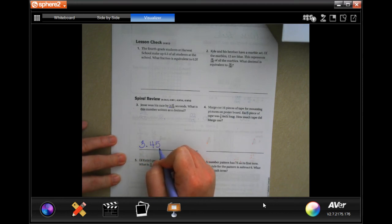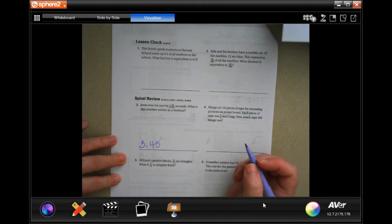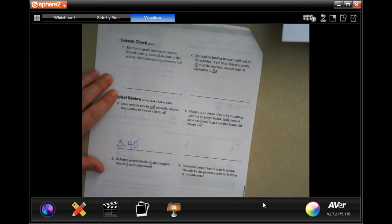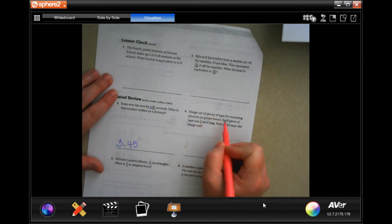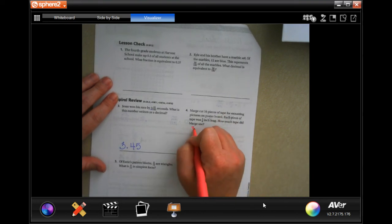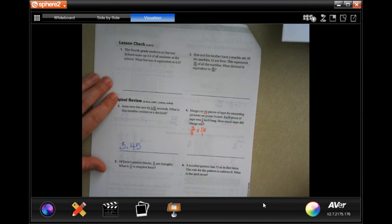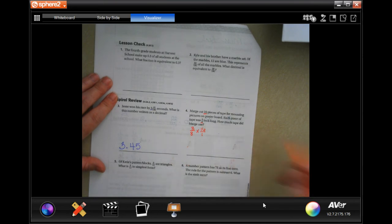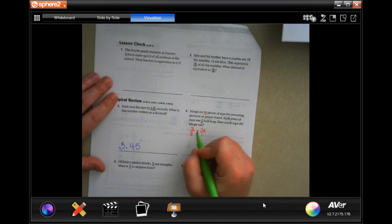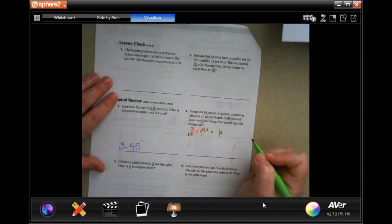March cut 16 pieces of tape for mounting pictures on poster boards. Each piece was 3/8 of an inch long. How much tape did March use? Well, 3/8 and she did 16 pieces. I'm going to put that 16 over 1. Now we cross cancel. Eight goes into eight once and eight goes into 16 twice. When we multiply straight across, we get 6 over 1, which is 6 inches.